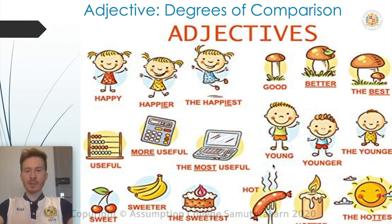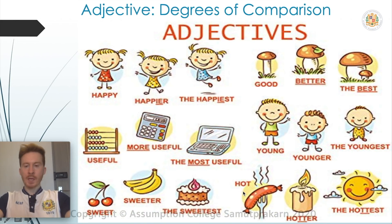Now let's look at the rest of the examples: young, younger, the youngest; sweet, sweeter, the sweetest. And the last one: hot, hotter, the hottest. Notice that in the comparative and superlative of 'hot', we have added an extra T.